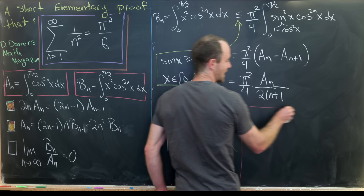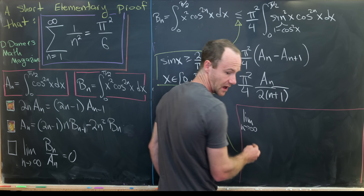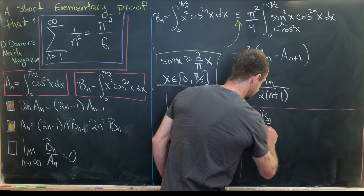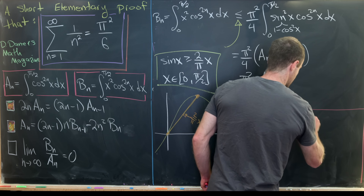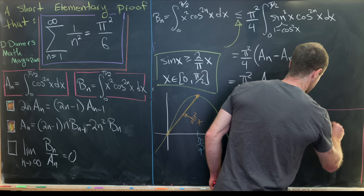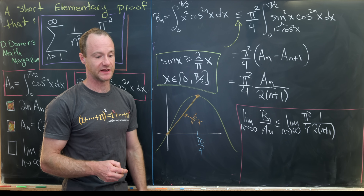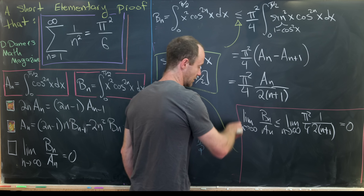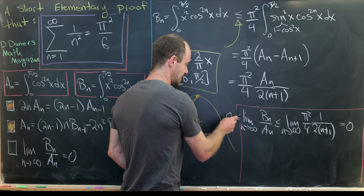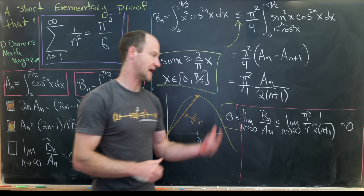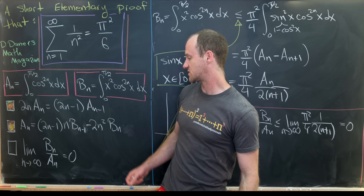Now we have everything in place. The limit of b_n/a_n is bounded above by the limit of (π²/4)·1/[2(n+1)], which clearly goes to 0. Since b_n/a_n ≥ 0 for all n, the squeeze theorem gives us that the limit is exactly 0. That completes our third tool.